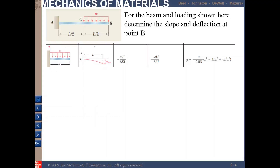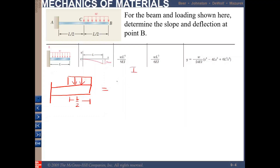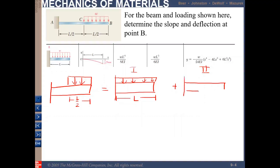To answer this question, we break down the loading into two parts so we can use this case. The original configuration has uniform loading starting from C to B at a length of L/2. We transpose this into: first, a full uniform loading from A to B at length L; plus second, an inverse loading applied from A to C at length L/2.